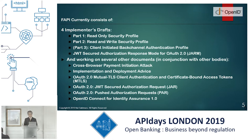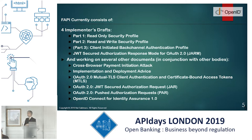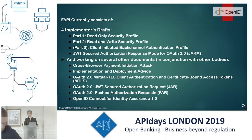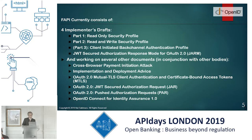We have four implementer drafts. Part one is the read-only security profile. Part two is the read-and-write security profile. Part three is the Client Initiated Backchannel Authentication profile, developed quite recently. And there's another one called JWT Secured Authorization Response Mode for OAuth 2.0.